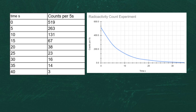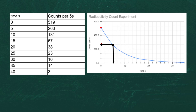To find the half-life from the graph, we go to our initial point — it looks like about 520 counts per five seconds. Half of 520 is 260, so we come down to 260 on the y-axis, make a mark, read across to the graph curve, and then go down to the x-axis to find how long it took for that to happen.